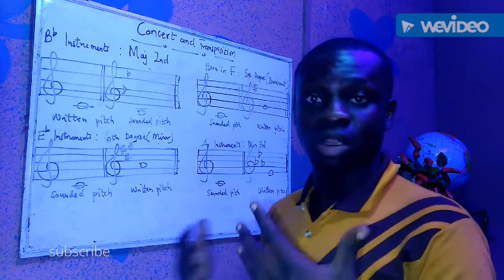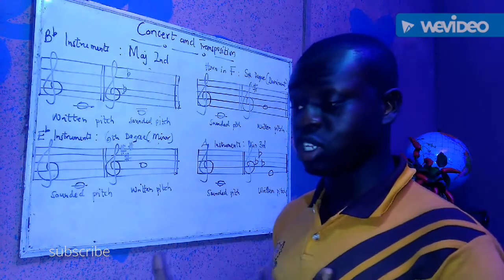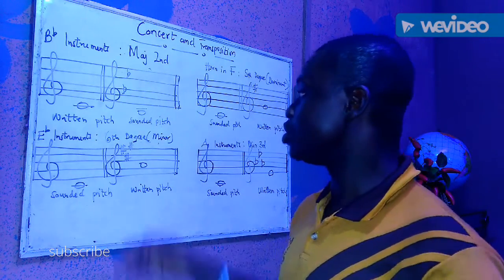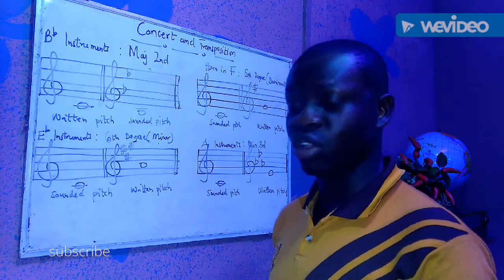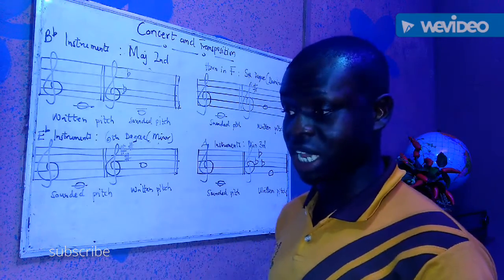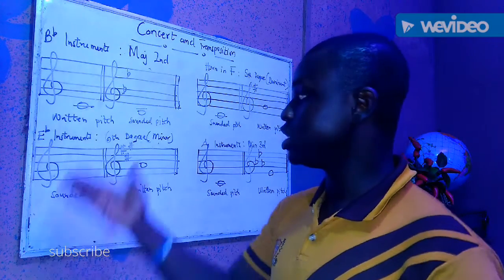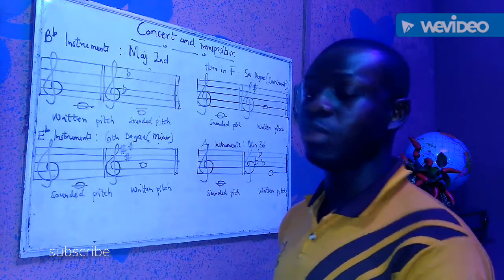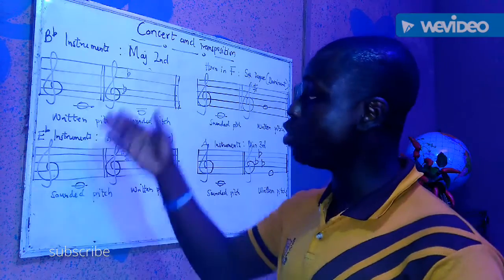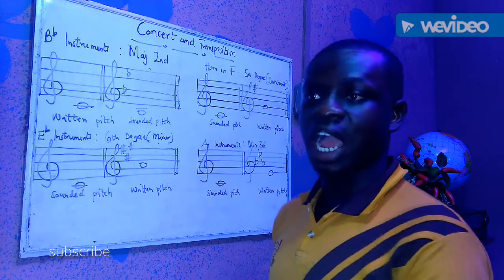The trick about B-flat instruments is that their notes are written a major second above the sounded pitch. So when you have B-flat as the sounded pitch, the major second above B-flat is C — that becomes the written pitch. When you have C as the sounded pitch, the major second above C is D — that is the written pitch. So B-flat is the sounded pitch, but on the written sheet you see C.